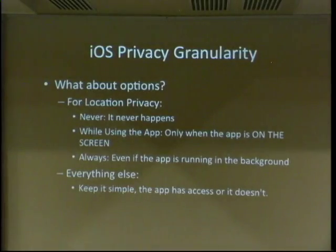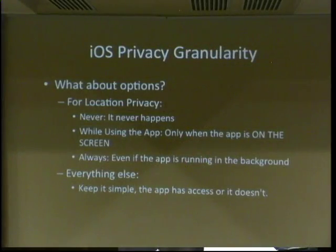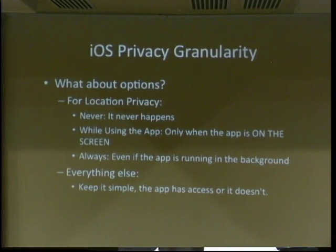If you feel that you need that functionality later, you can easily go in and turn it back on. For location settings, they've given you three options: never — the app never knows where you are; while using the app — only when it's on screen, and this is important; and always — even if the app isn't actively running, it can still know your location. For all other settings, it's just on and off. Easy enough that mom can do it.